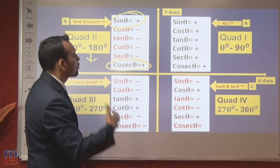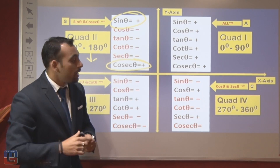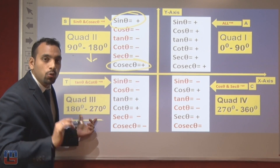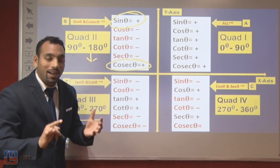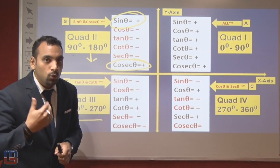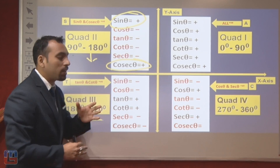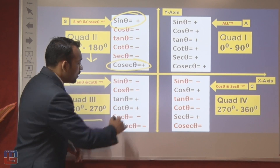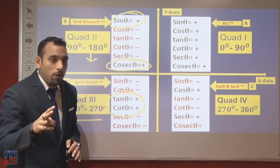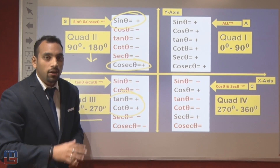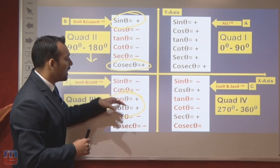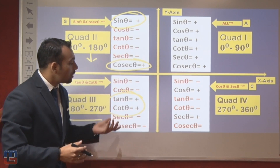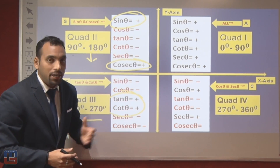In the third quadrant, angles from 180° to 270° lie. In the third quadrant, tan θ and cot θ — these two trigonometric ratios — will be positive, and the rest will remain negative.